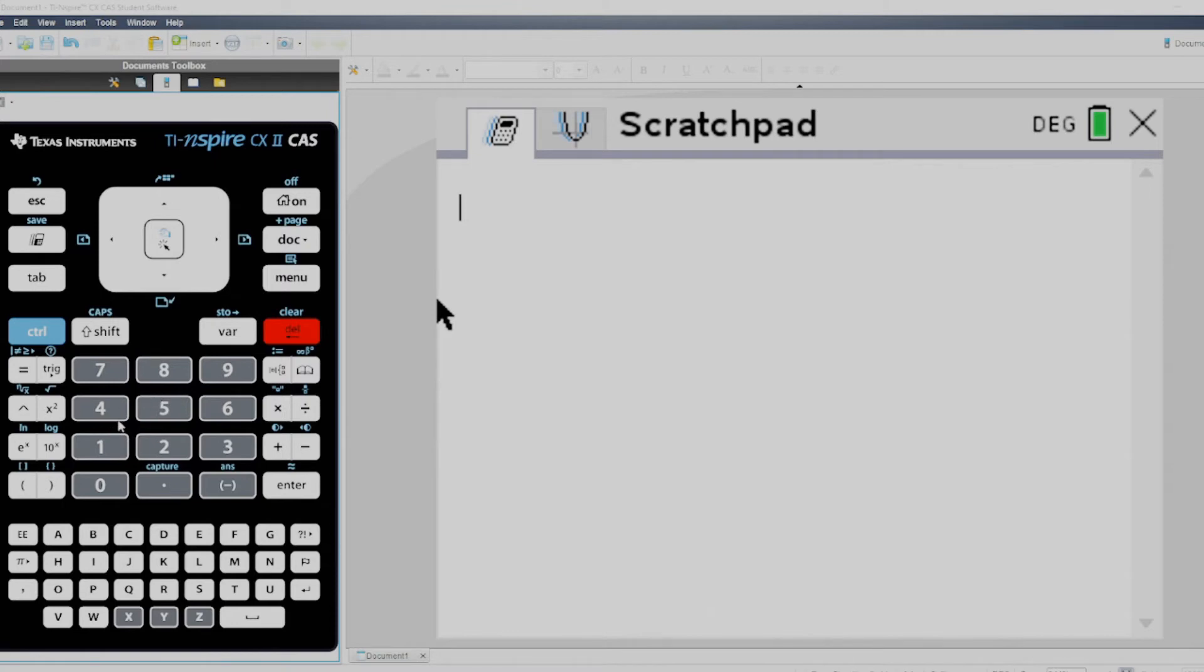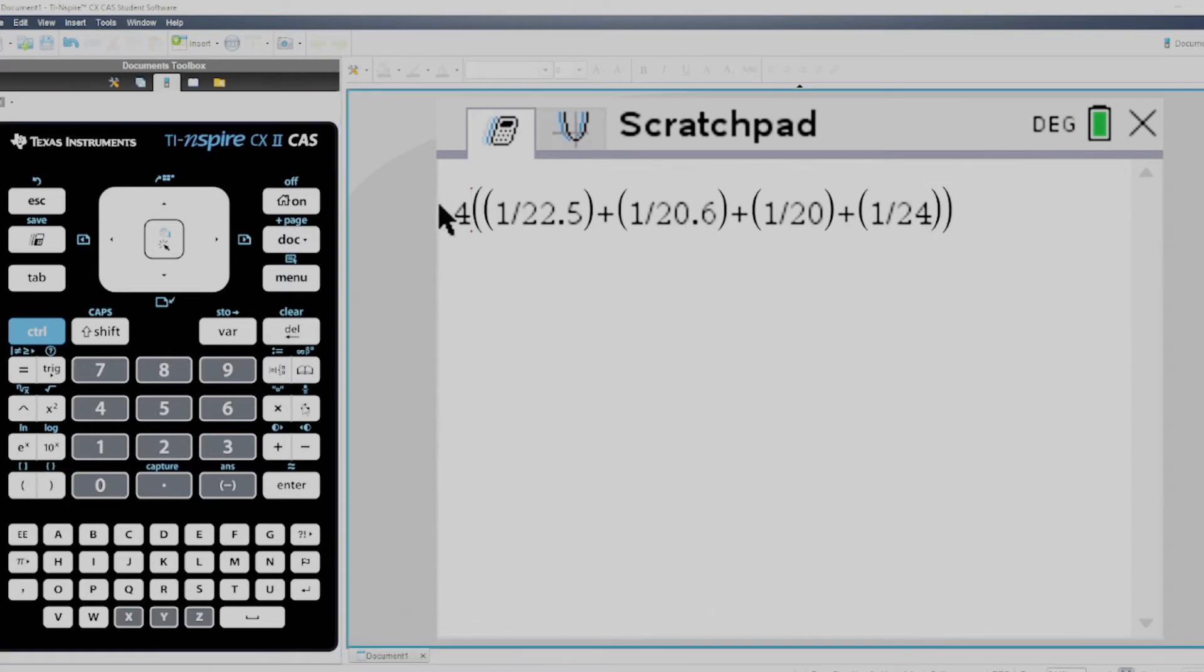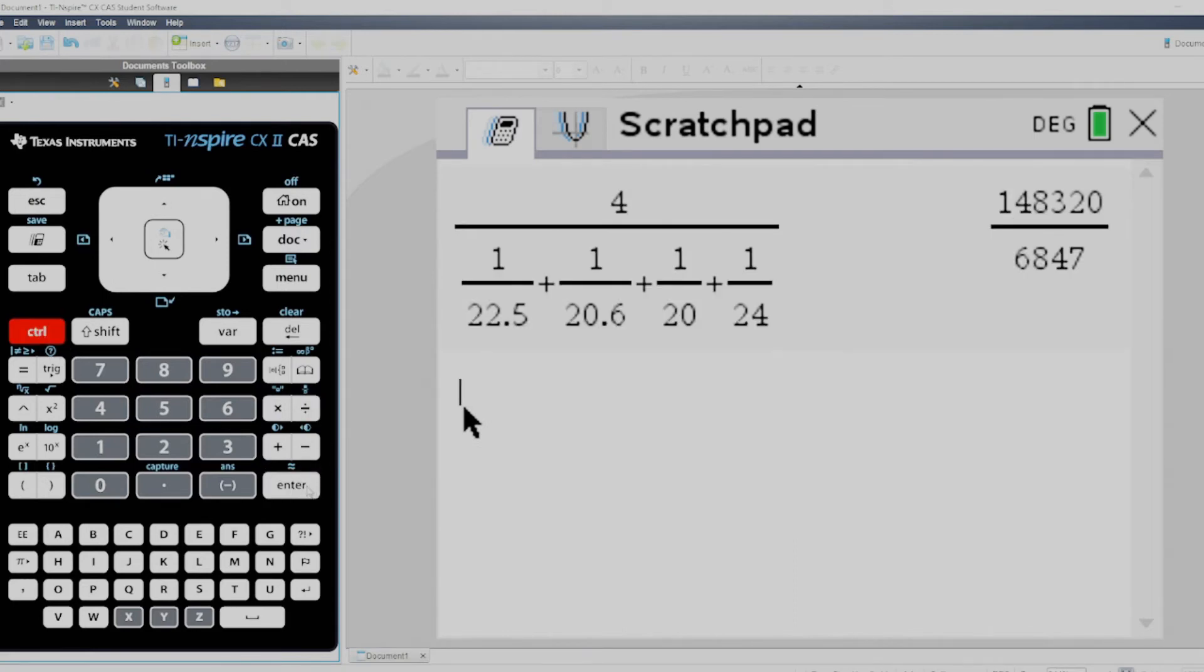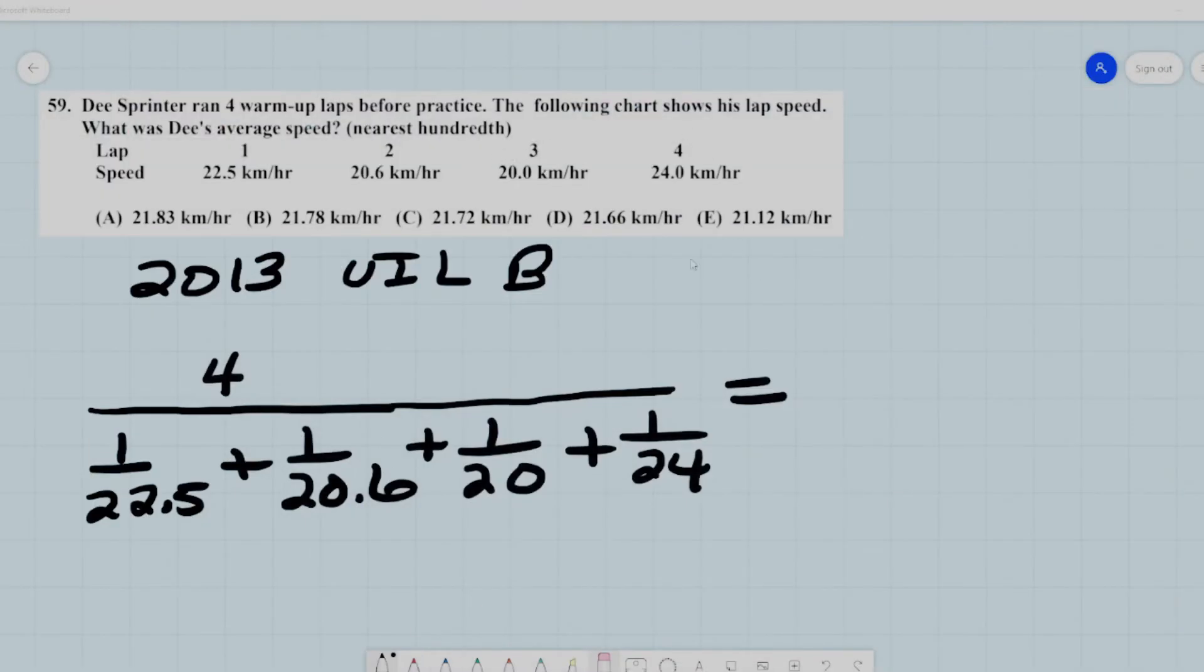I don't know of a harmonic mean button on the calculator, so I just have to plug it in. And when we push enter, I get that control approximate and I get 21.662. And our answer is D, 21.666. So it's approximately equal to 21.66. Alright, so that's our answer there.